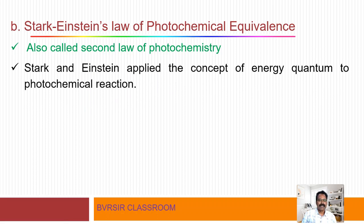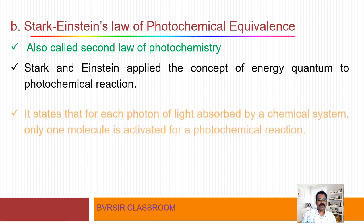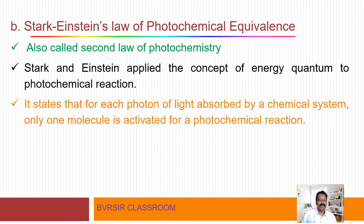Stark and Einstein applied the concept of energy quantum to photochemical reactions. Energy quanta — packets — fall on the substance and based on that, the chemical reaction proceeds. It states that for each photon of light absorbed by a chemical system, only one molecule is activated for a photochemical reaction.